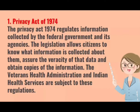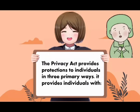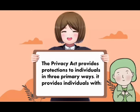The Privacy Act of 1974 regulates information collected by the federal government and its agencies. The legislation allows citizens to know what information is collected about them, assure the veracity of the data, and obtain copies of the information. The Privacy Act provides protections to individuals in three primary ways: the right to request their records subject to Privacy Act exemptions; the right to request a change to their records that are not accurate, relevant, timely, or complete; and the right to be protected against unwarranted invasions of their privacy resulting from the collection, maintenance, use, and disclosure of their personal information.